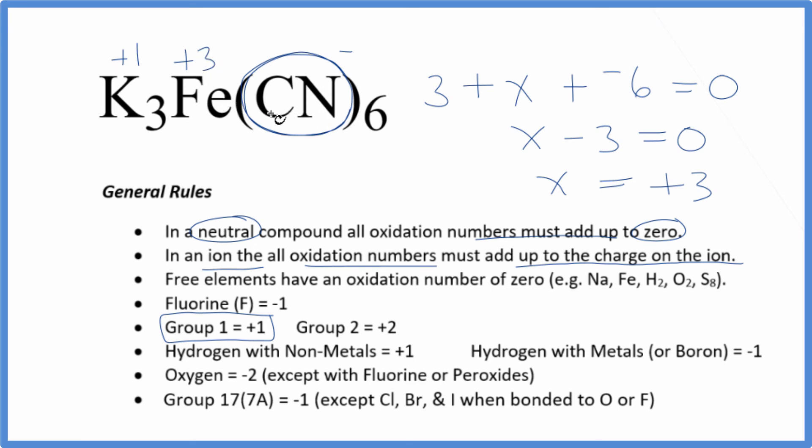If you're asked to find the oxidation number for the carbon and the nitrogen in the cyanide ion, there's a link in the description for how to do that. It's a little bit more complicated, but we do use the same rule here, that the ion, all the oxidation numbers add up to zero.